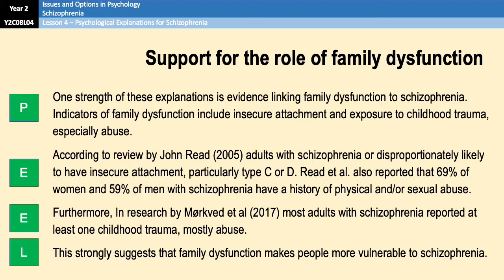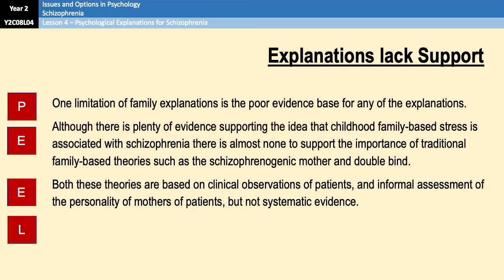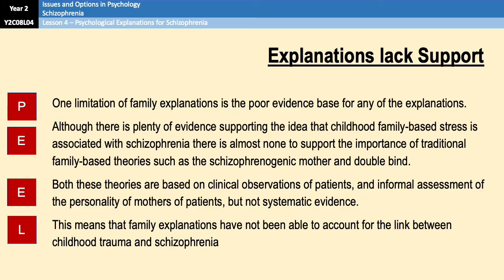You may realize that none of this actually supports the specific theories we looked at, but it does support the idea that some kind of family dysfunction could make people vulnerable to schizophrenia, so it is research support overall. However, the theories that we looked at lack support. There's plenty of evidence linking family-based stress and trauma to schizophrenia, but there's almost no evidence for the importance of traditional family-based theories like the schizophrenogenic mother and the double-bind hypothesis. Both of those theories are based on clinical observations and informal assessments of personalities of mothers of patients, with no systematic evidence. So there's a lack of support particularly for the schizophrenogenic mother and the double-bind hypothesis.